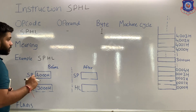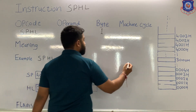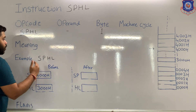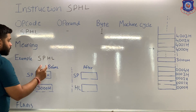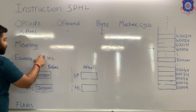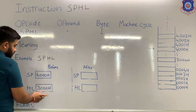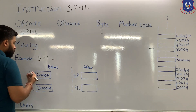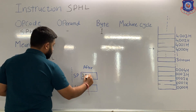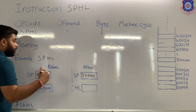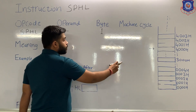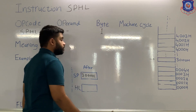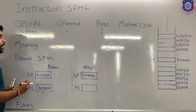The stack pointer contains 4000H, meaning the top of the stack is at 4000H — the stack pointer is pointing at the top of the stack. When this instruction is executed, the content of the HL pair, which is 3000H, will be transferred to the stack pointer. So after execution, the stack pointer will be 3000H. Previously it was pointing at 4000H, but now it is pointing at 3000H — we are now pointing at a new stack.